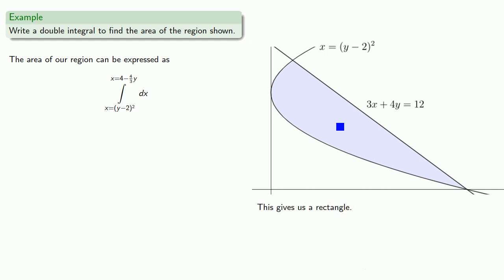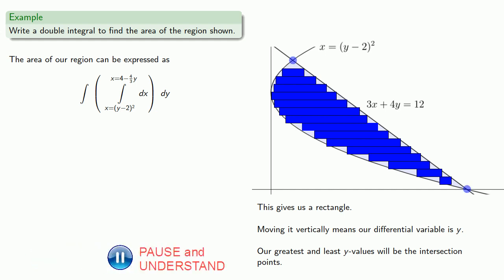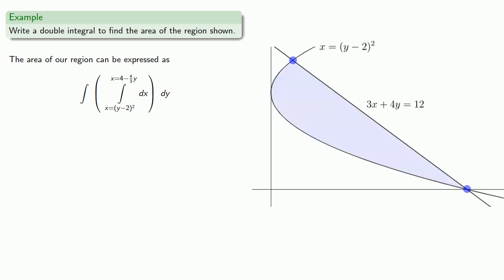Now if we let x vary between these two limits, this will give us a rectangle. And moving it vertically means our differential variable is y, and our greatest and least values will be at the intersection points. And so we solve to find those intersection points. And we see that our y values go from 0 to 8 thirds.